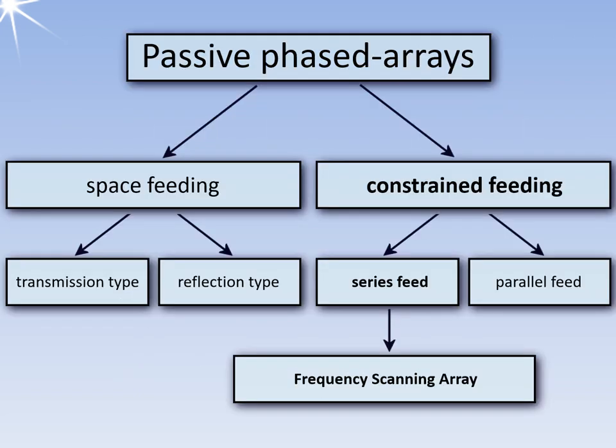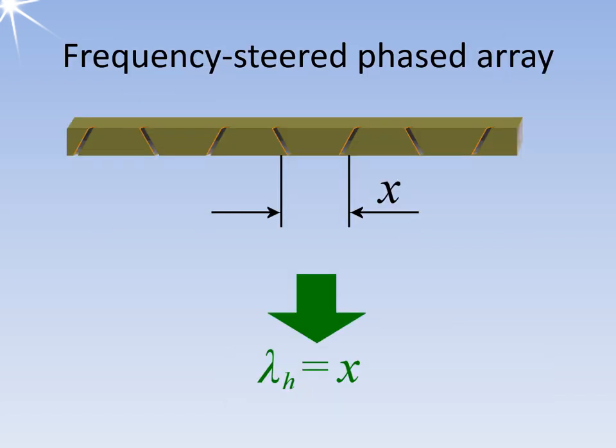However, this phase shift can also be specifically exploited. This leads to phased array antennas with frequency dependent beam steering. These are a special case of series feed. The frequency-steered phased array antenna, FSPA, uses this effect to steer the beam depending on the transmission frequency.